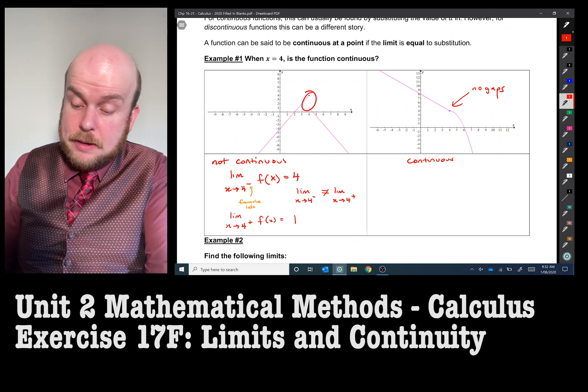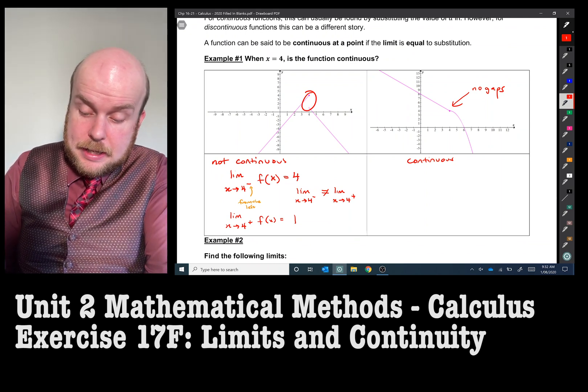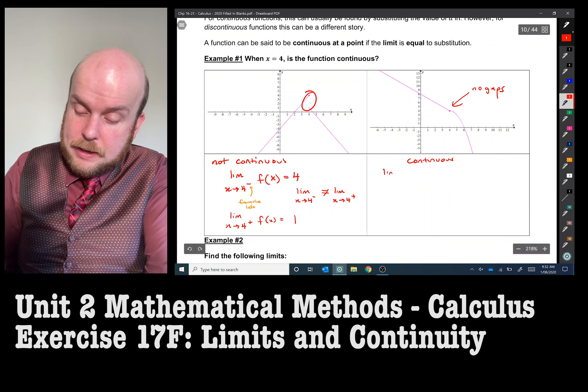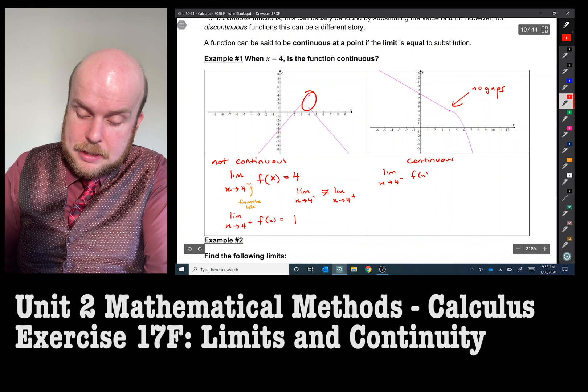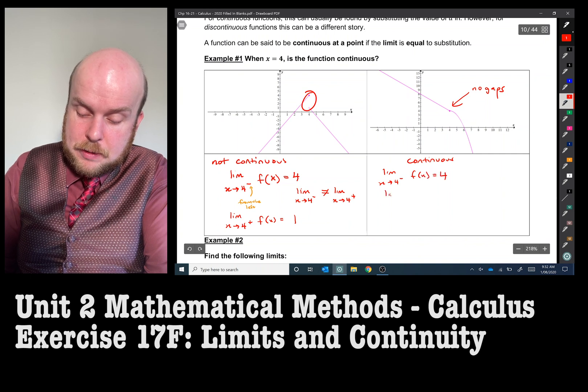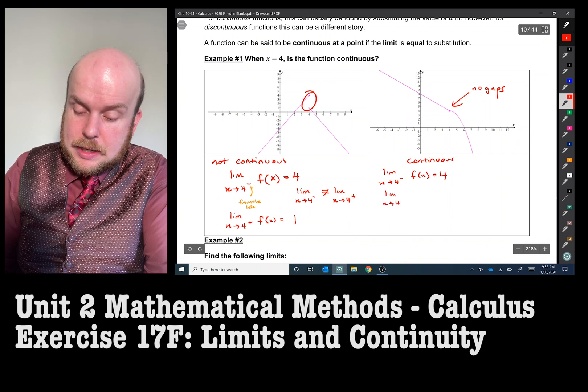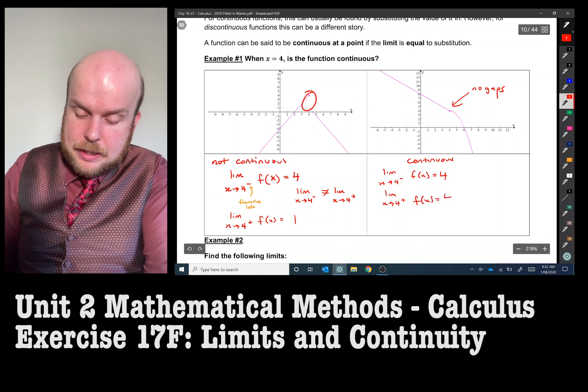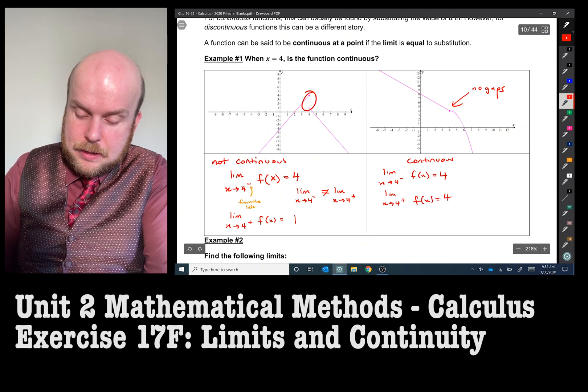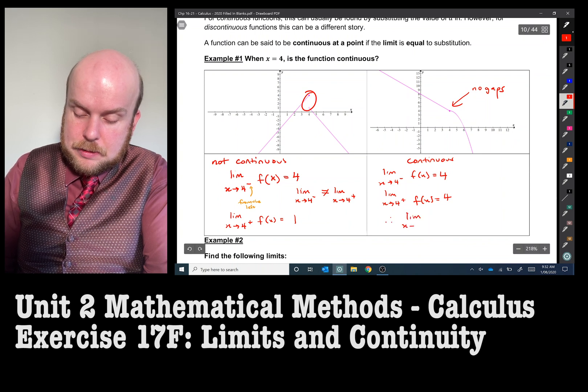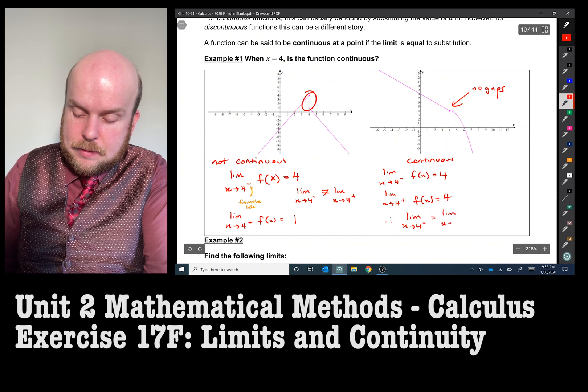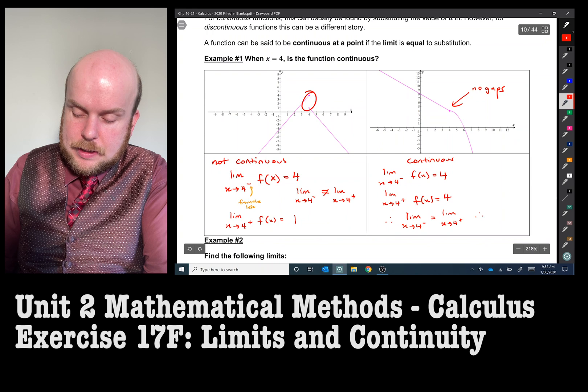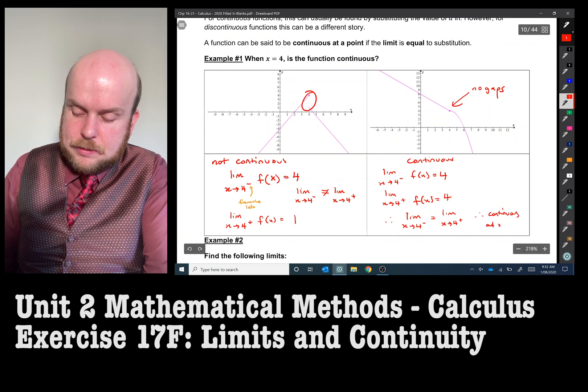Whereas the example on the right here, we've got the limit as x approaches 4 from the left is going to be equal to 4 and the limit as x approaches 4 from the right is also equal to 4. And so therefore the limit equals the limit as it comes from the right and therefore continuous at x equals 4.